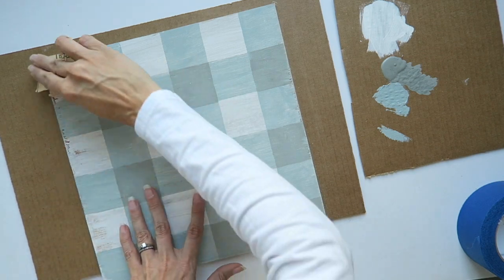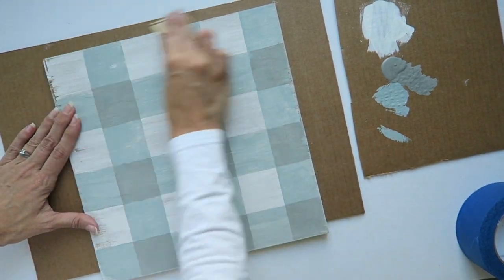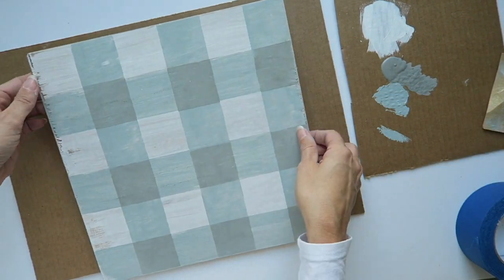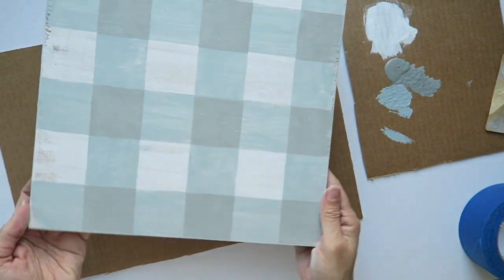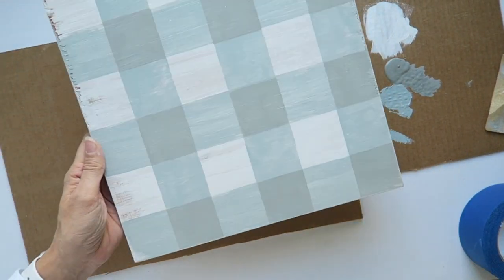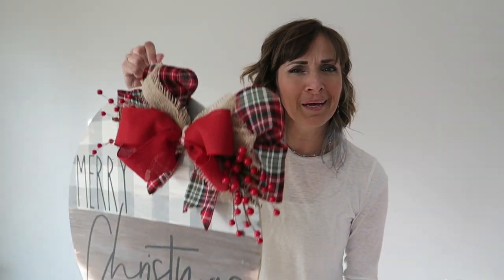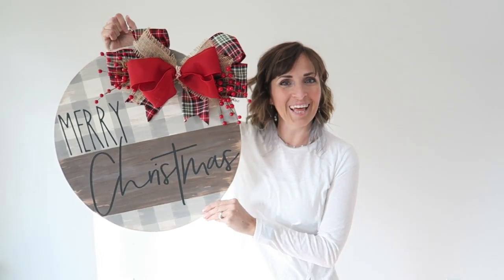I sanded the edges. I also sanded the whole board, although you can't see it in this part of the video. Because I like it kind of roughed up, but it's up to you. If you want it solid, you don't have to sand it. Now that you know how to paint buffalo plaid, you can make super cute signs like this one.